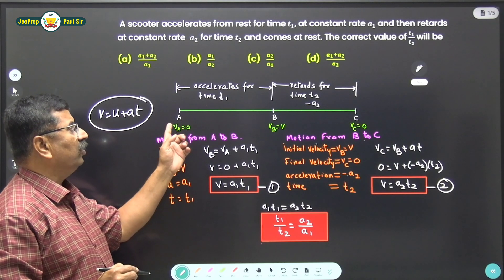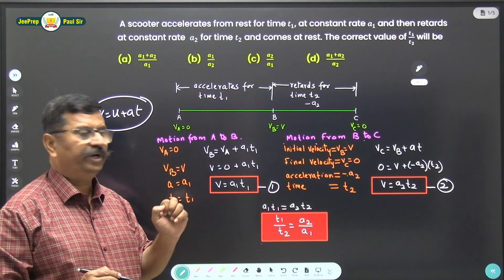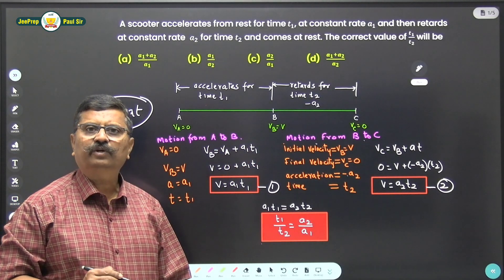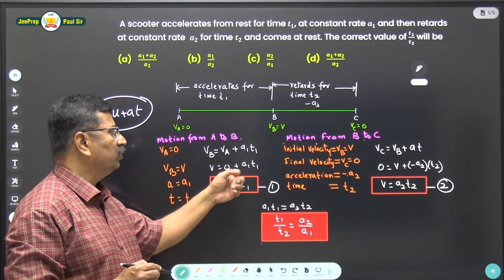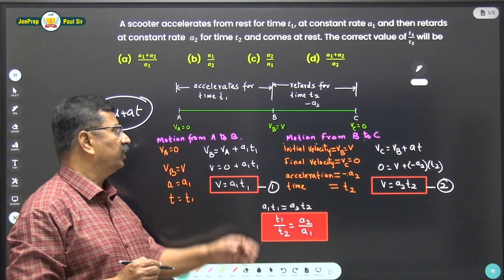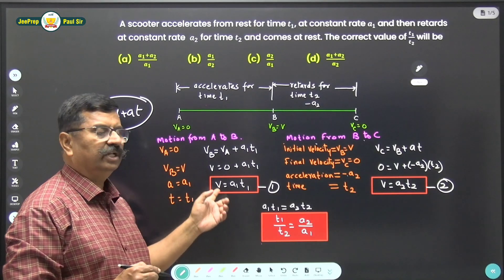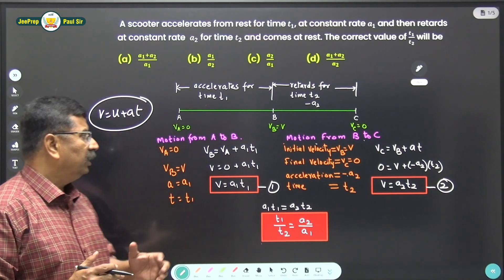Now, here initial velocity for the motion from A to B is the velocity at point A, which is 0, and the final velocity is velocity at point B, that is v. Therefore, v is equal to 0 plus a1 t1, because acceleration is a1 here for time t1 seconds. So I get equation v is equal to a1 t1.